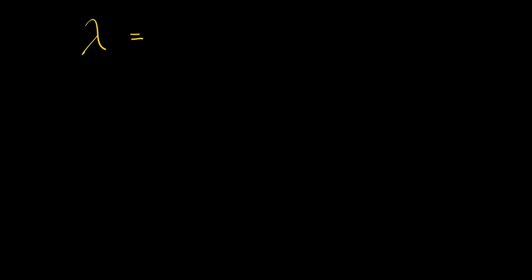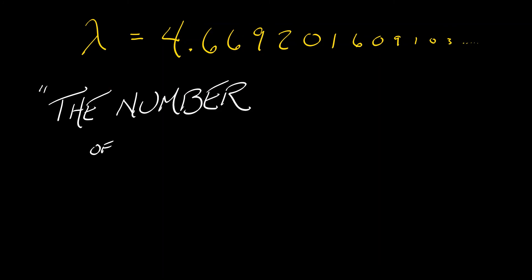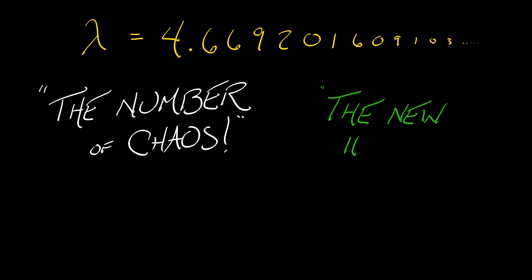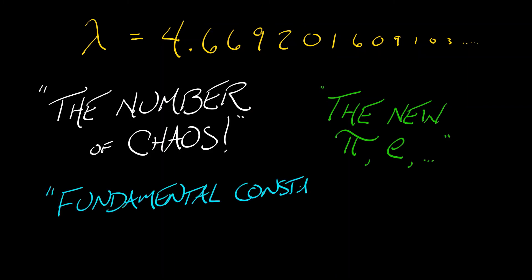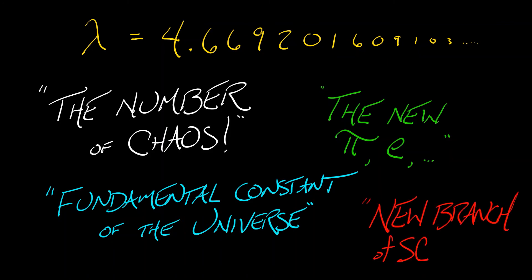This universality caused a great deal of excitement. The number 4.669201609103... is the number of chaos. It's the new pi, it's the new e, it's the new fundamental constant of the universe, leading to a new branch of science: the science of chaos.